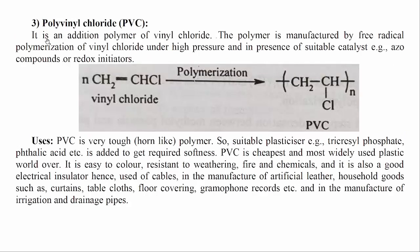3. Polyvinyl chloride. It is an addition polymer of vinyl chloride. The polymer is manufactured by free radical polymerization of vinyl chloride under high pressure and in the presence of suitable catalysts, for example azo compounds or redox initiators.